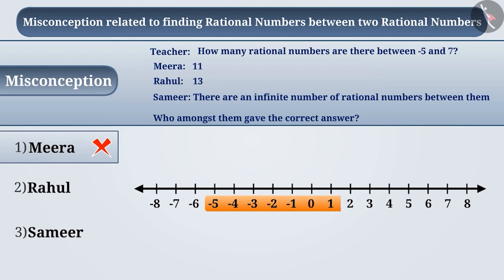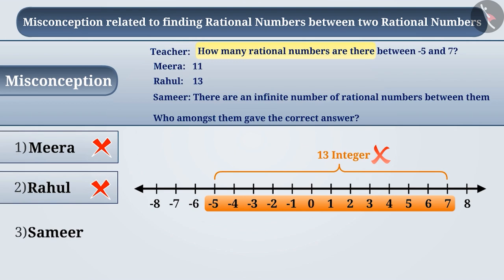Rahul counted the integers from minus 5 to 7 and he replied 13. Here integers were counted when the question was asked to count the rational numbers. So this is again a wrong answer. That is, option 2 is also the wrong answer.